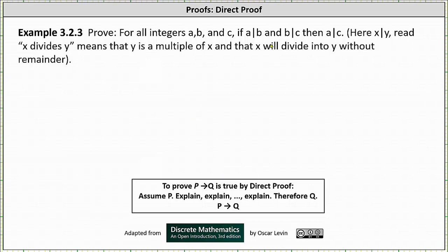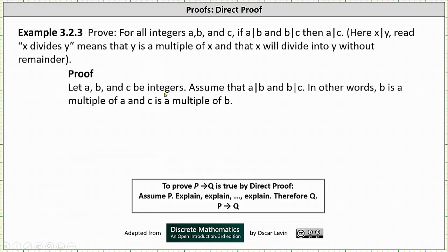To begin the proof, we assume P is true, which means we begin by letting A, B, and C be integers and assume A divides B and B divides C. In other words, B is a multiple of A and C is a multiple of B.